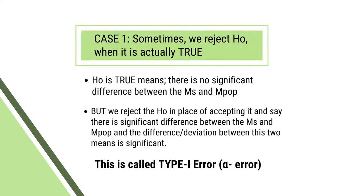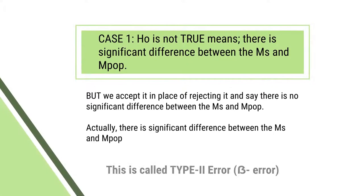Consider case 1. Sometimes we reject a null hypothesis when it is actually true. Null hypothesis being true means there is no significant difference between the sample mean and the population mean. But we reject the null hypothesis instead of accepting it and say that there is a significant difference — that the deviation between the two means is significant. This is called type 1 error, or alpha error.